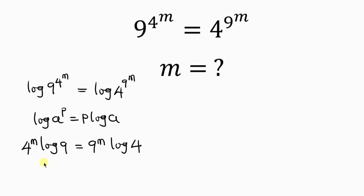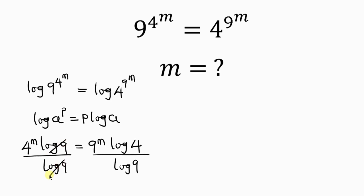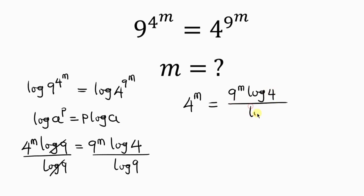Our next step will be to divide both sides by log 9. So log 9 cancels out from the left, leaving behind 4 to the m equal to, on the right hand side, 9 to the m times log 4 all over log 9.